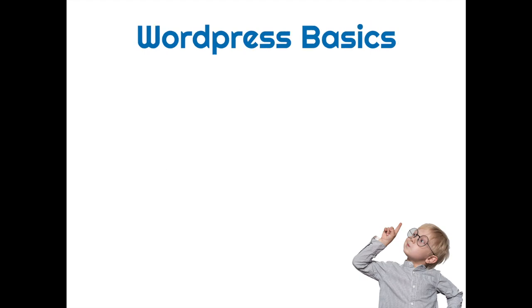WordPress includes two main features. The first one is themes and the second one is plugins. A WordPress theme constitutes the design basis of your website. Every WordPress website has a theme, and each theme has its own design elements and settings. There are many free themes out there which you can use, and there are also many premium themes which you need to pay for — usually something between $50 to $150 US dollars.